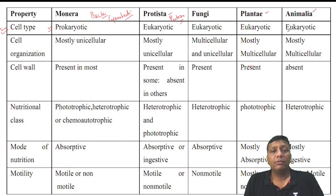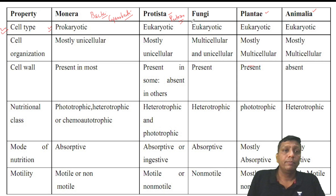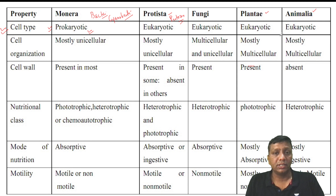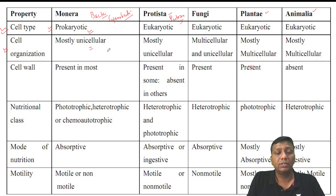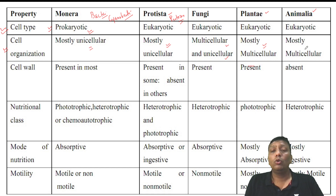Regarding cell organization: Monerans are unicellular. Protists are also mostly unicellular. Fungi are multicellular and sometimes unicellular. Plantae are multicellular, made up of many cells. Animalia — we are all examples of Animalia — are also multicellular organisms. So cell organization varies across the five kingdoms from unicellular Monerans to multicellular animals and plants.